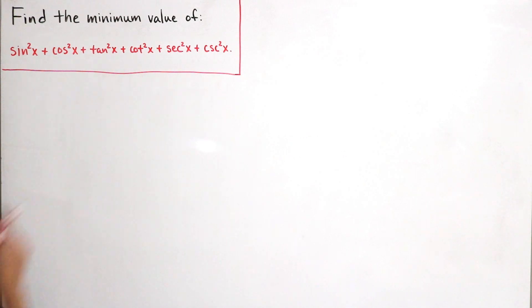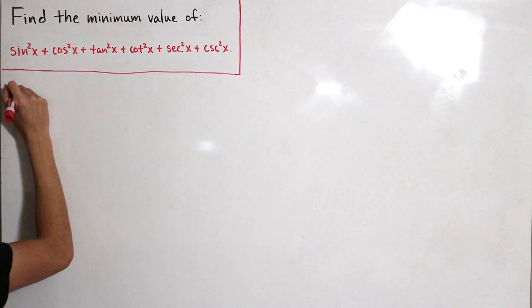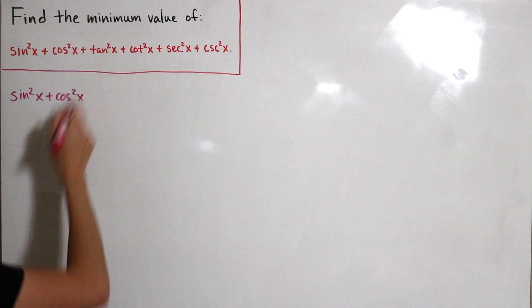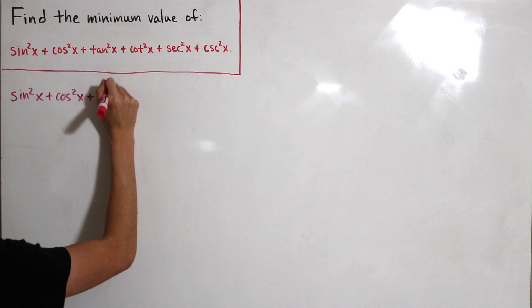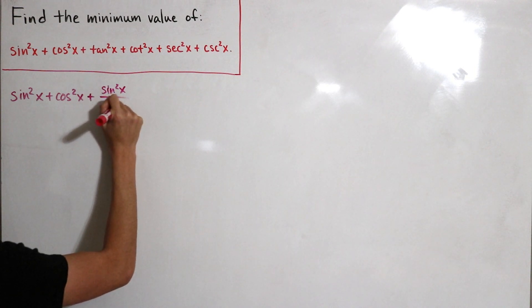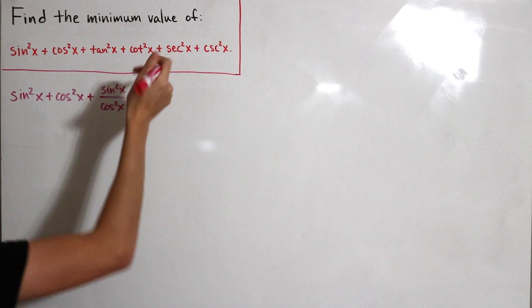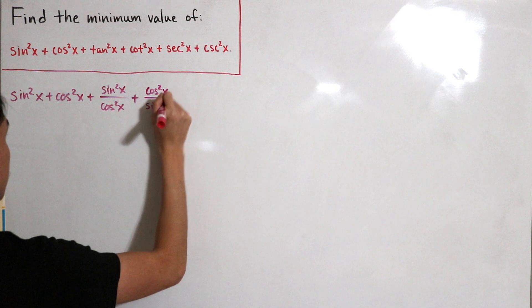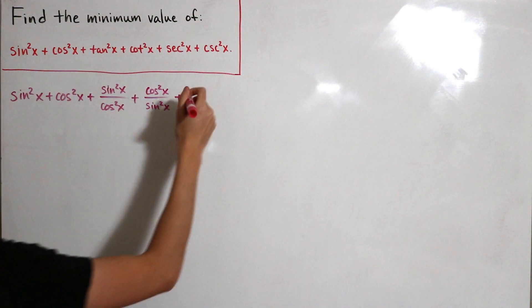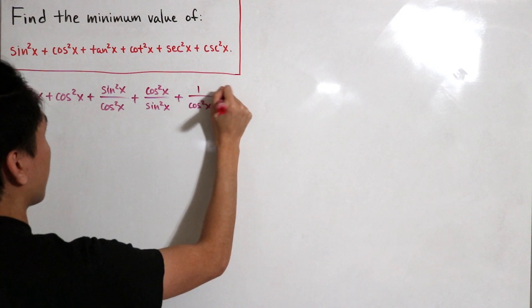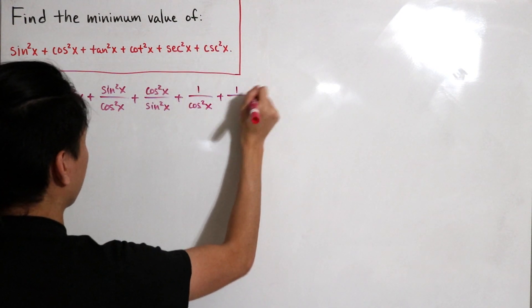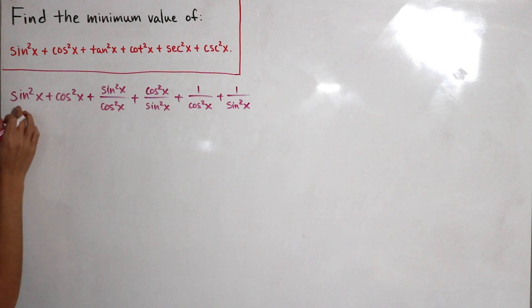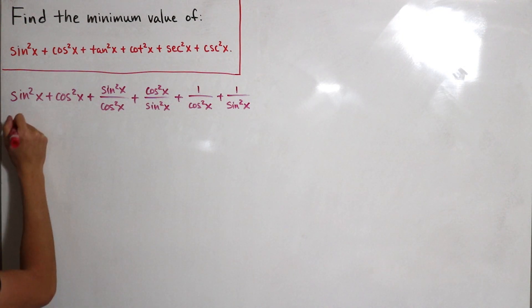Given our trigonometric function, let's rewrite this a little differently. Sine squared of x and cosine squared of x remain the same. Tangent squared of x is the same as sine squared of x divided by cosine squared of x. Cotangent is just the opposite: the numerator is cosine squared of x and the denominator is sine squared of x. Add this with secant squared of x, which is just one over cosine squared of x. And cosecant squared of x is just one divided by sine squared of x.